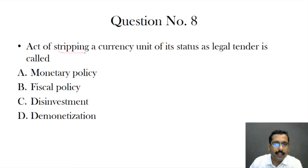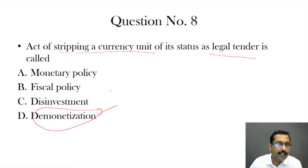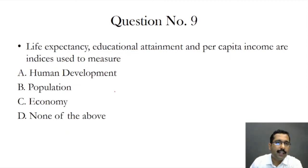Question eight: the act of stripping a currency unit of its status as legal tender is called what? It is called demonetization. In India, demonetization happened in November 2016, when 500-rupee and 1000-rupee notes were demonetized and their legal tender status was cancelled.